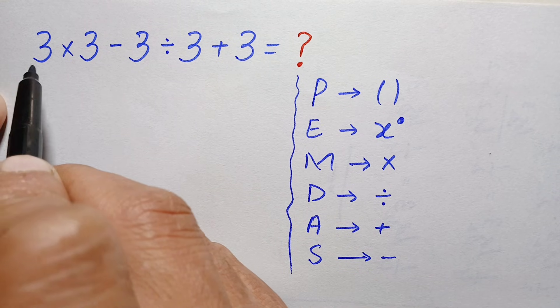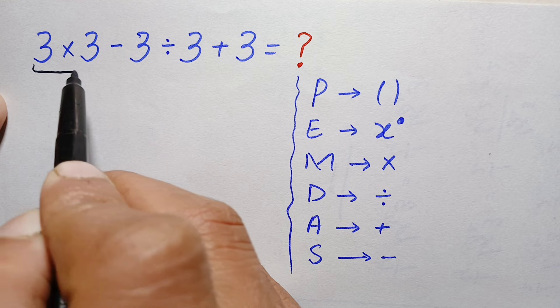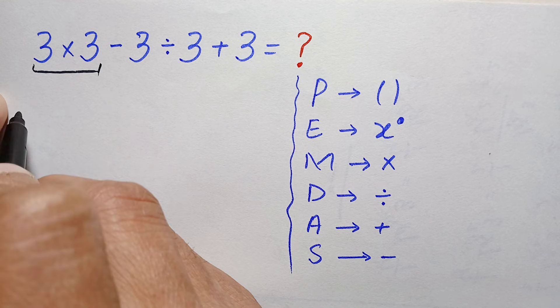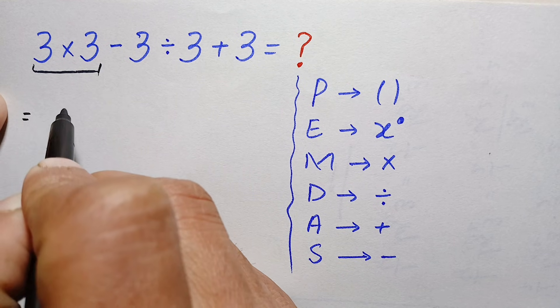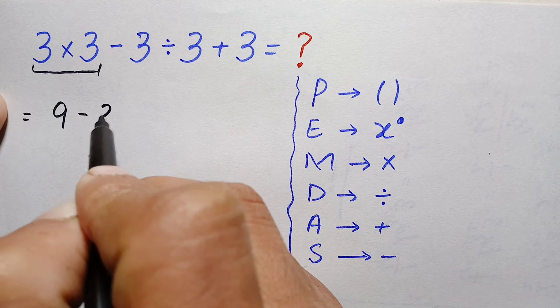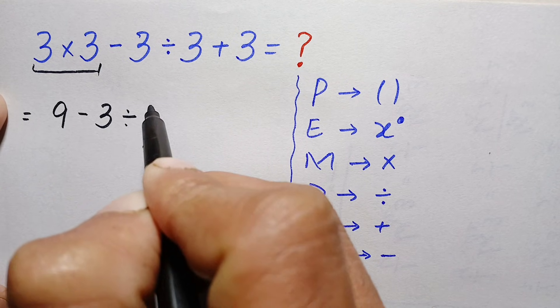First of all, according to the rule, we will simplify the product of these two numbers. We will do this multiplication. So here, 3×3 is simply 9. This will become 9-3÷3+3.